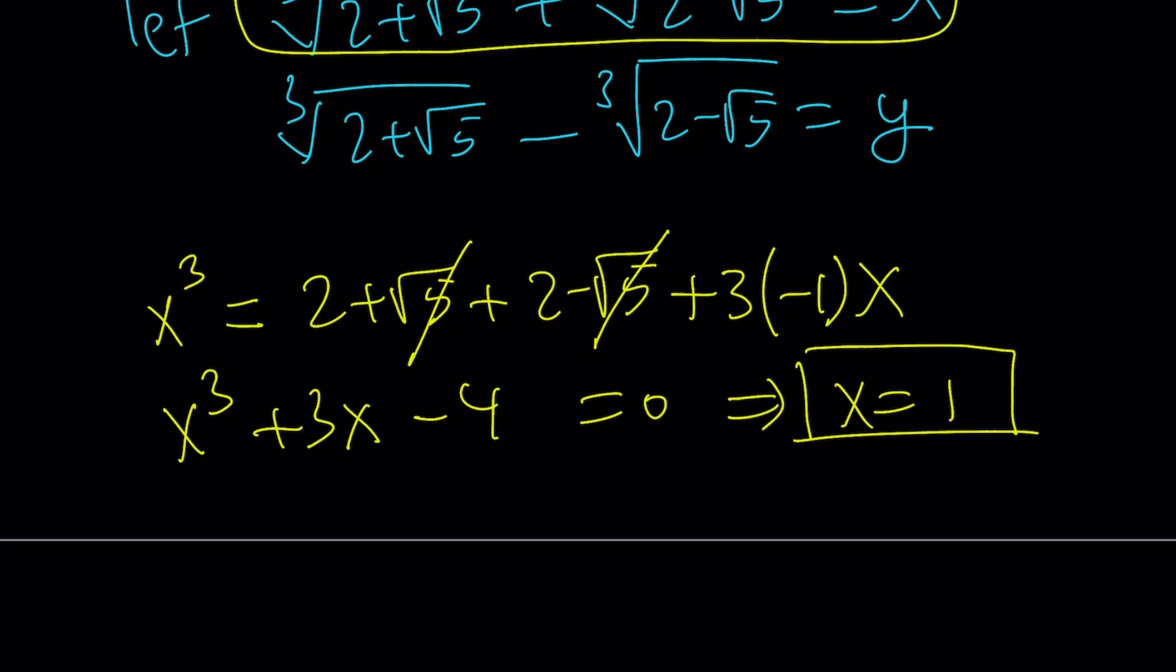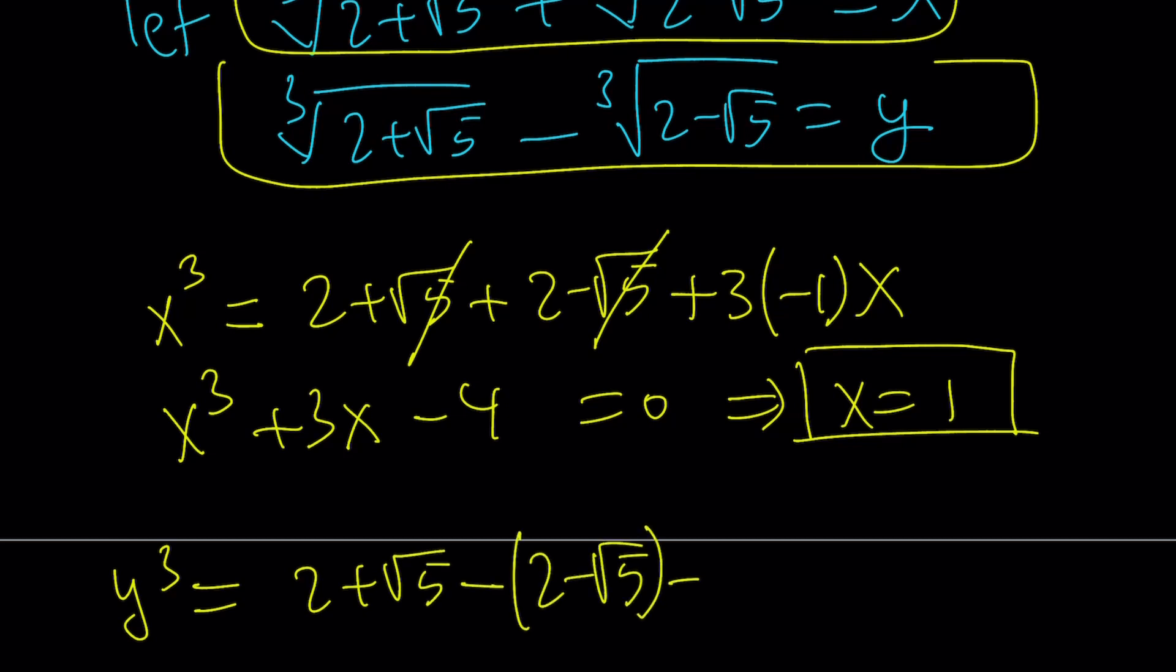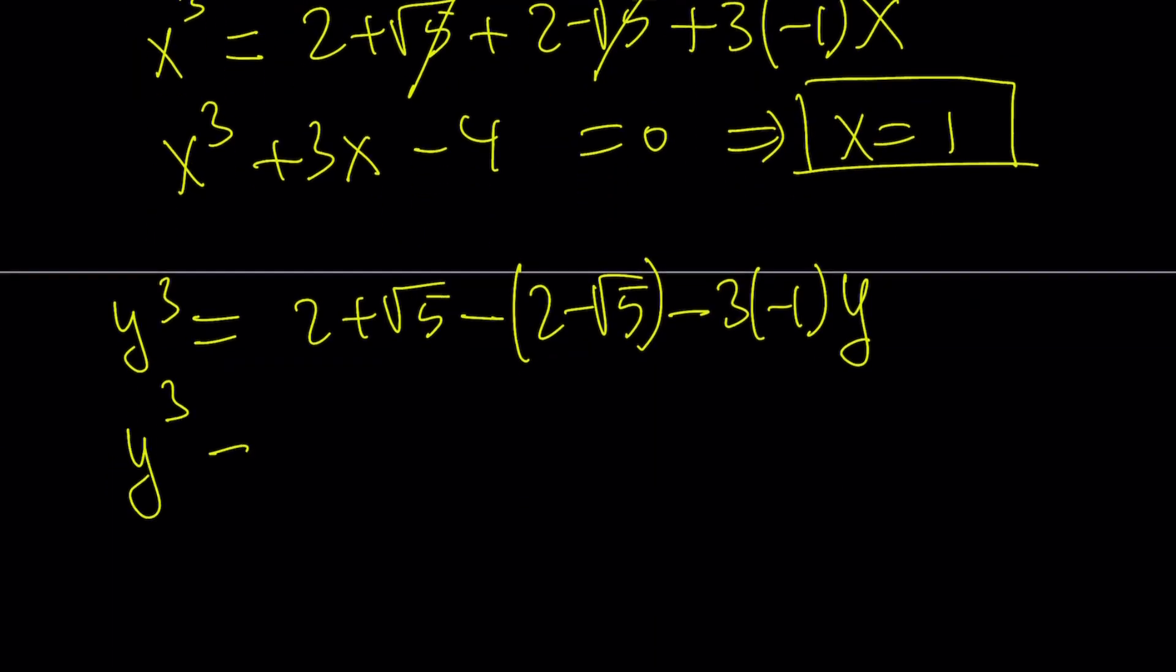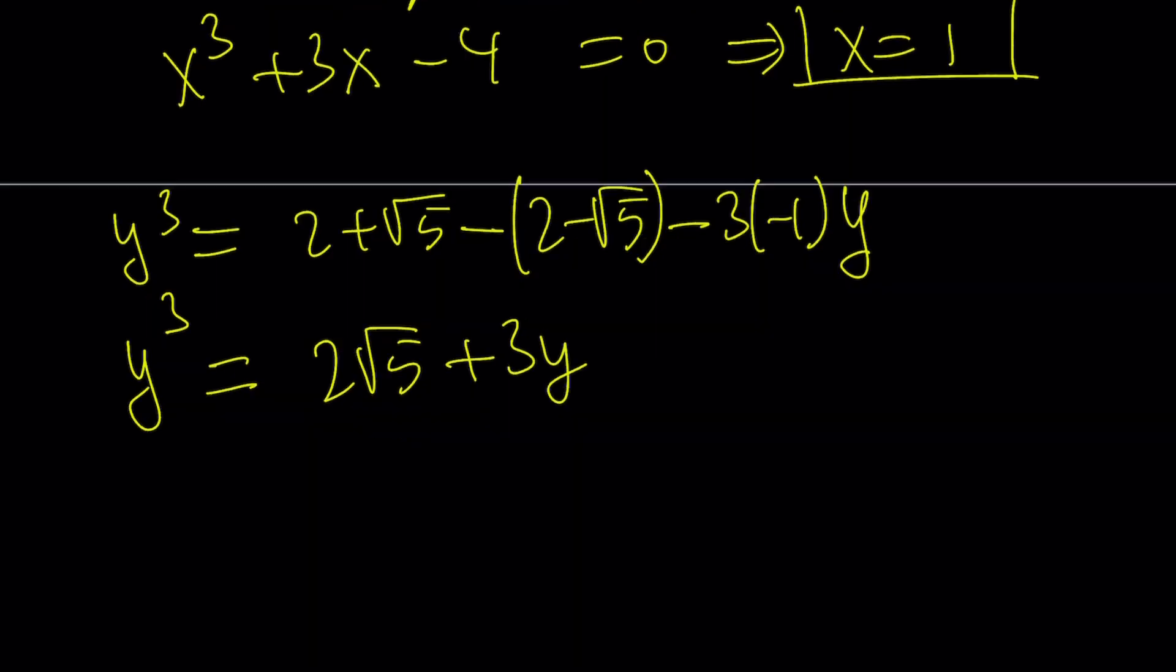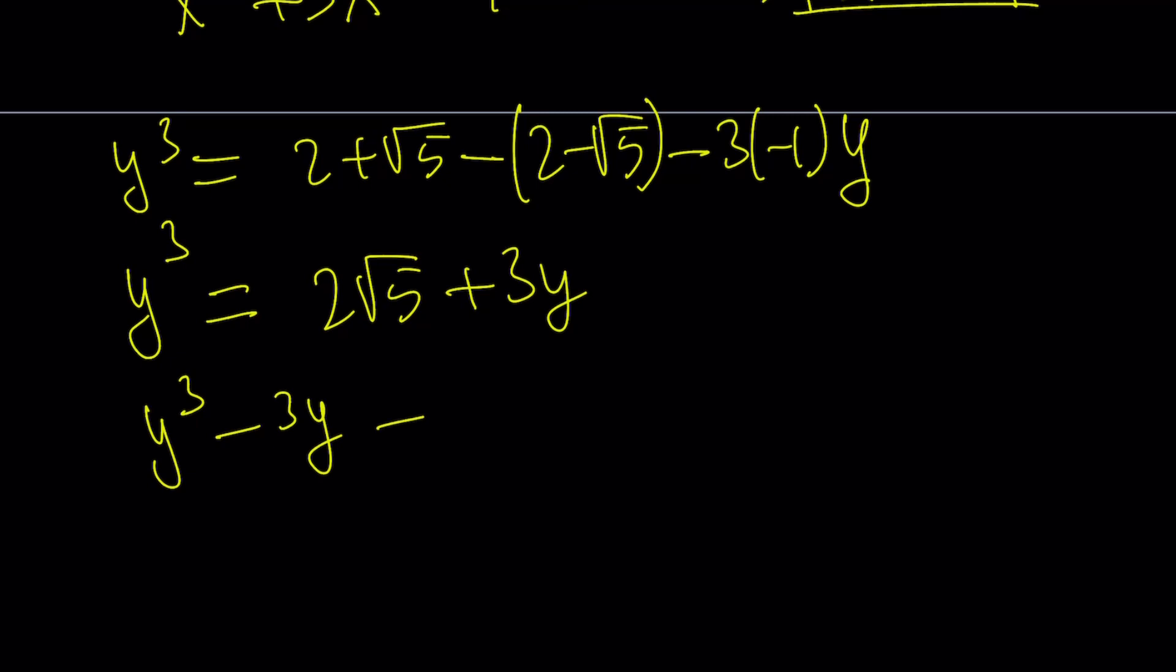Let's go ahead and take a look at the y value. We'll cube both sides again. That's going to give us y cubed equals a cubed, which is 2 plus root 5, minus b cubed. We have to be careful because this has a minus sign. Minus 3ab, that's 3 times negative 1, times a minus b. So, everything is minus, pretty much, because b is negated. This cubic is not going to be as nice as the other one, but that's okay. At this point, we have the following cubic: y cubed minus 3y minus 2 root 5 is equal to 0.